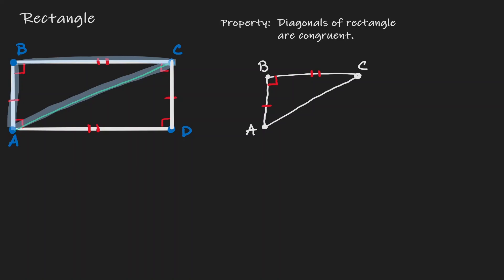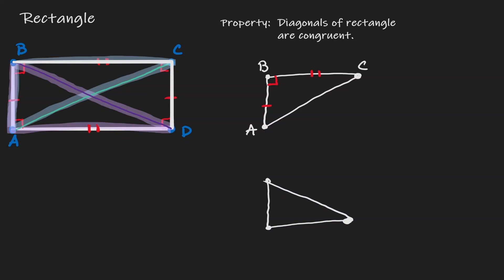Let's introduce diagonal BD. We have also created another right triangle — right triangle BAD. Let's put this triangle on the side. We know that angle A is 90 degrees, and we know that BA has one mark and AD has two marks. Let me highlight them using the same colors.